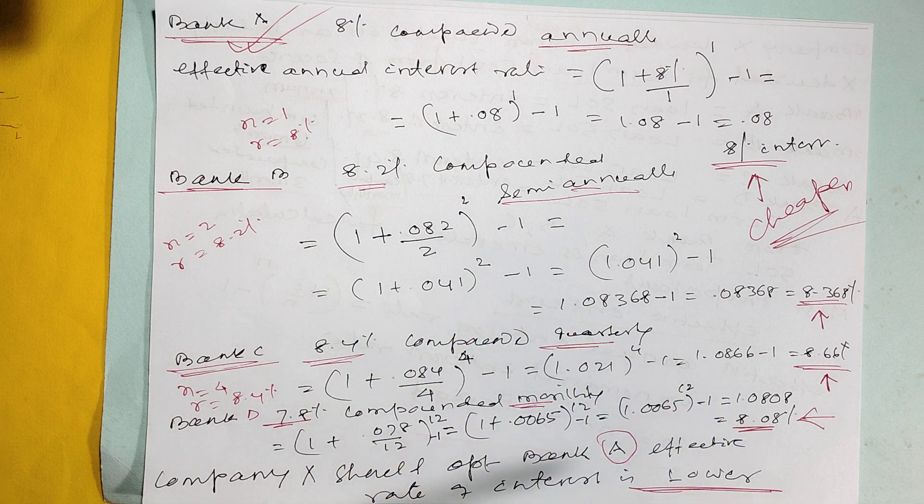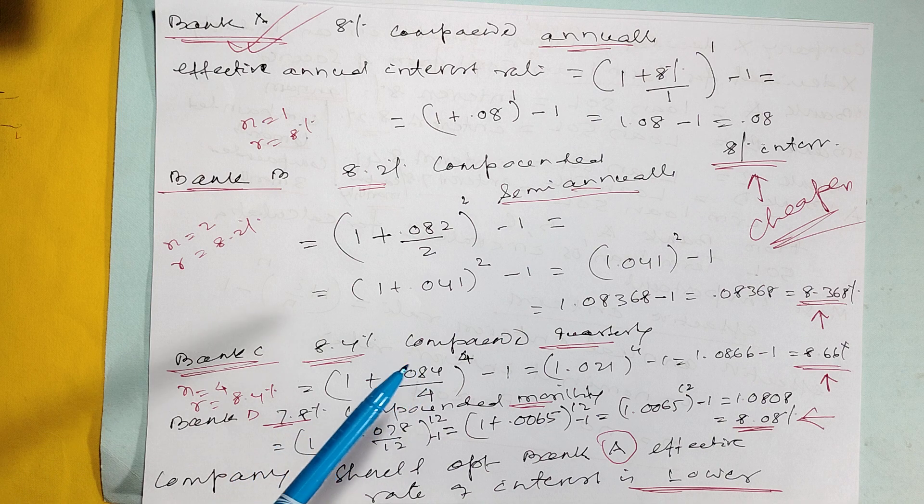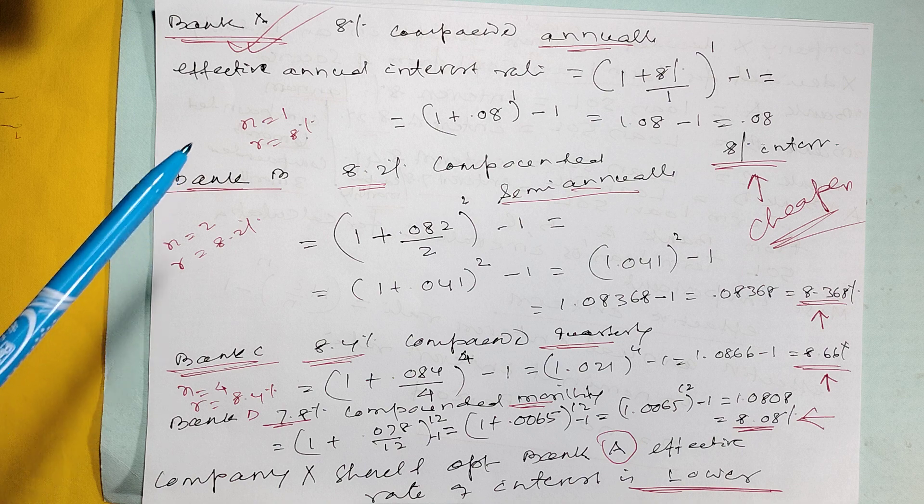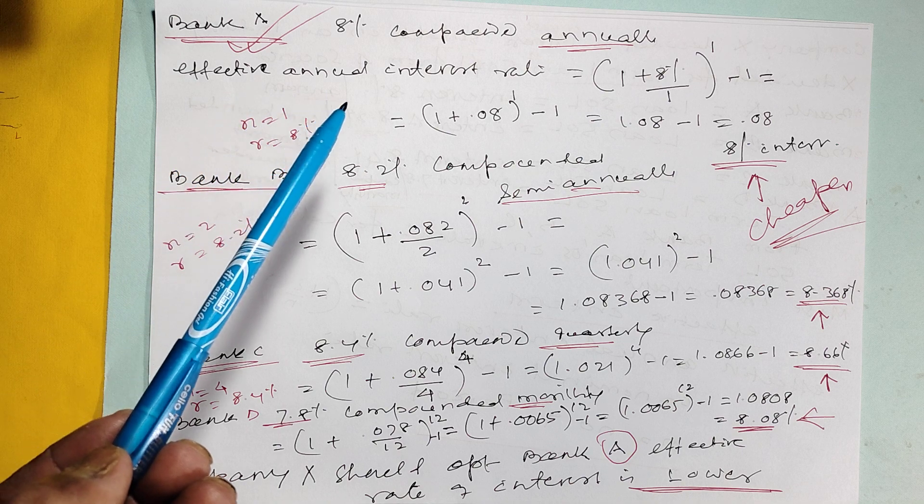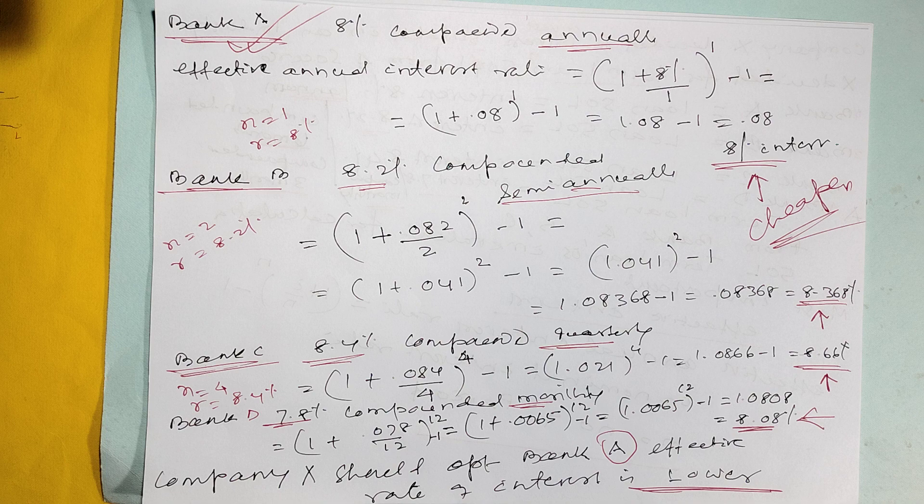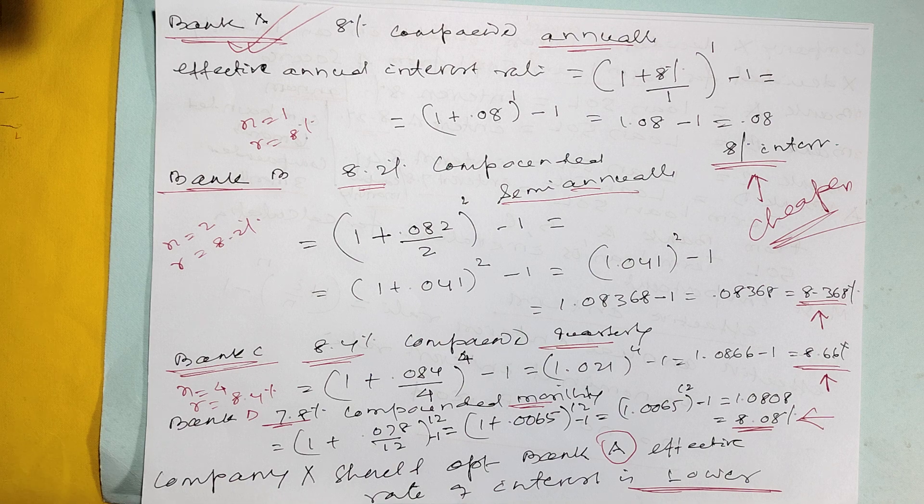Bank D, 7.8 percent compounded monthly, it is coming 8.08 percent. Out of four banks, A is the cheaper because 8 percent is the lowest in the market for the investor interest, so you will start for Bank A to complete it.